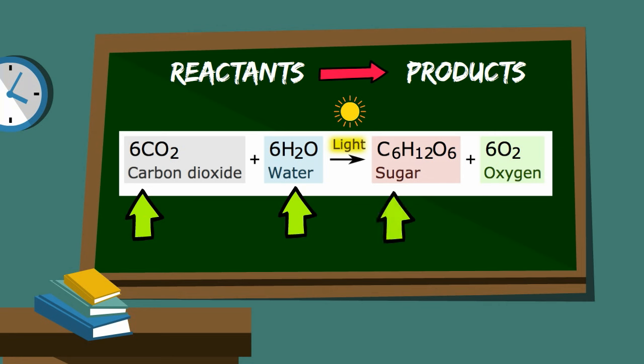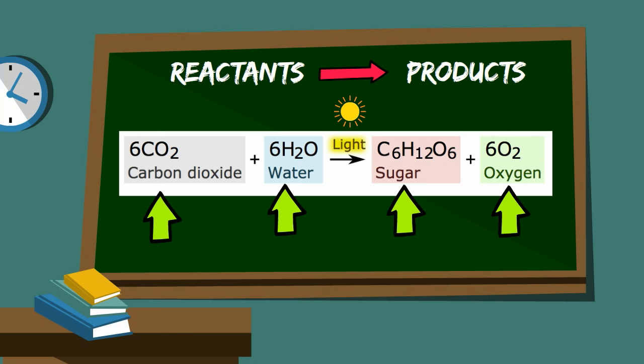Then you have glucose C6H12O6, and then finally you have 6 O2's. So there we go, the photosynthesis equation.